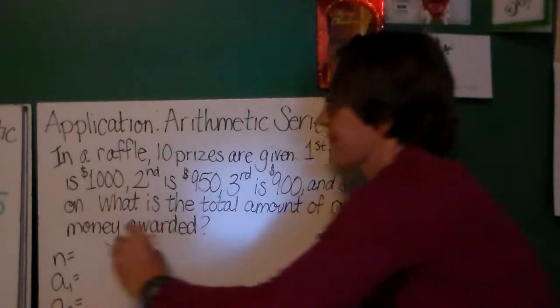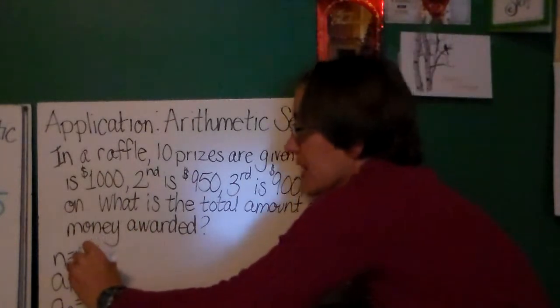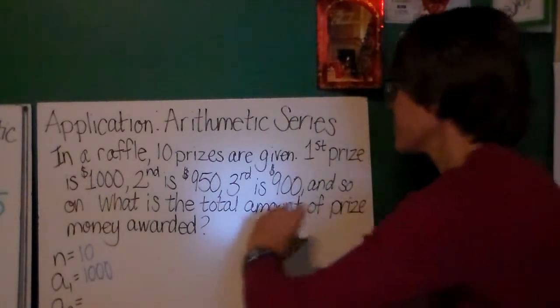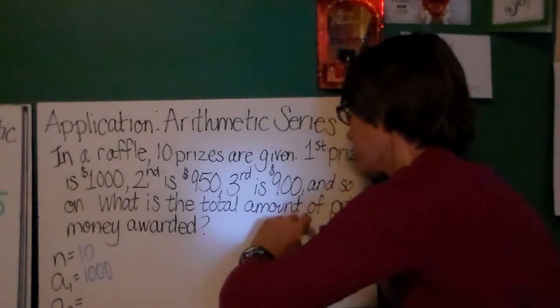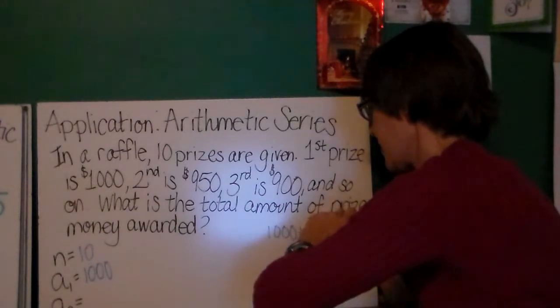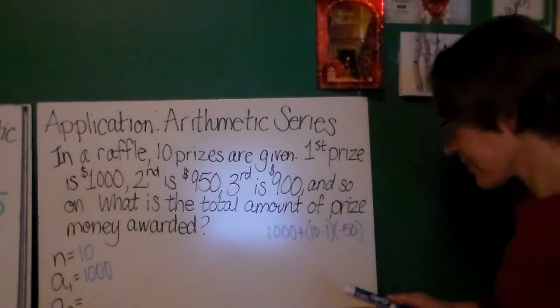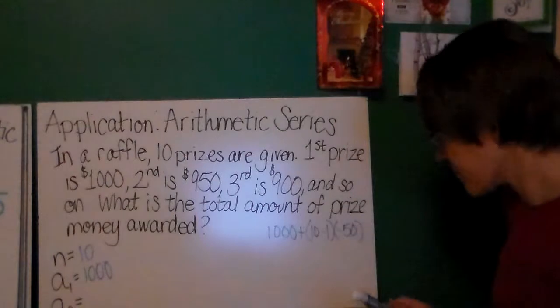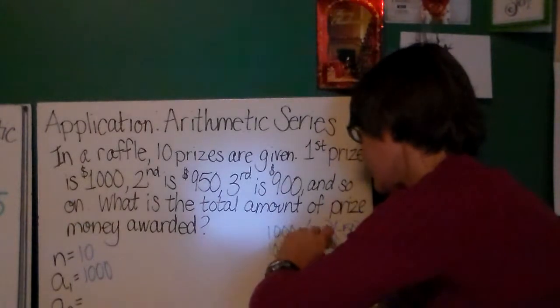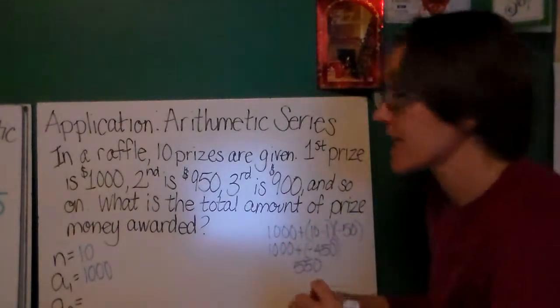Well, we know there are 10 prizes. I know that the first prize is $1,000. Now, I don't know what the 10th place prize is, but I do know that I can write my formula real quick and figure that out. So, 10 minus 1 times negative 50 because it's going down by 50 every time. So, $1,000 plus 9 times negative 50. 9 times negative 50 is negative 450. So, I want $1,000 plus negative 450. And that is going to be $550 for that 10th place winner.